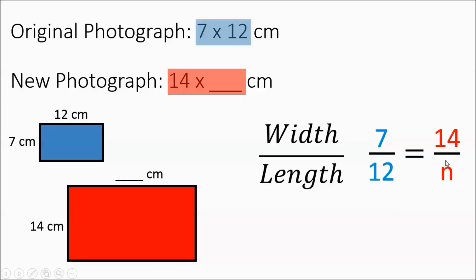Now using quick calculator skills, you could go 12 times 14 divided by 7. I'm going to give you the quick go around with this. If you need more detail on how to solve for n when you have a setup like this, check out the other video. We have the 7 times n equaling 12 times 14, and then divide by 7, you get the 24. And so this new photograph is going to be 14 by 24.